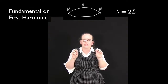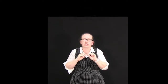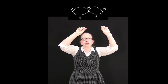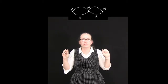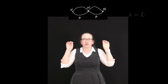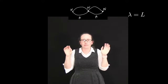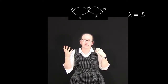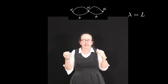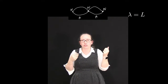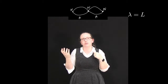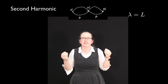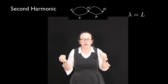We can think of another situation where you have two nodes at the ends and also a node in the middle. In this case we'd have two loops in our piece of string. Two loops is equal to one wavelength, so the length of the string is equal to one wavelength, and this case is known as the second harmonic.